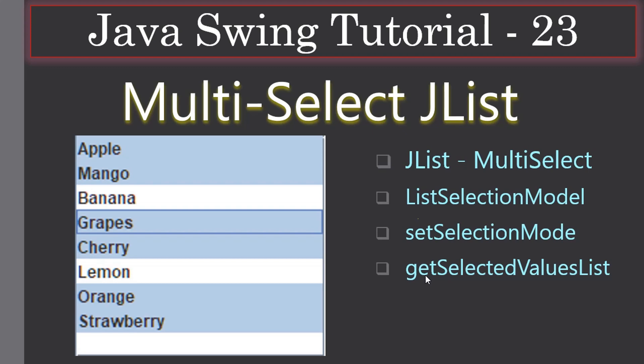Hello friends, welcome to the Java Swing tutorial. In the last video we saw about JList and we created it using an array. The JList in the previous video was a single-select list, meaning the user can select only one item from the list.